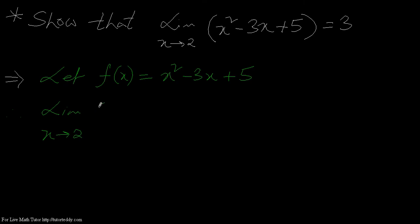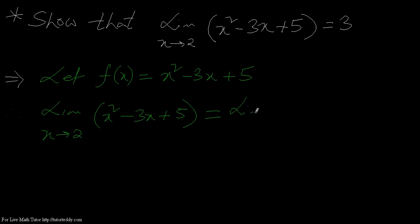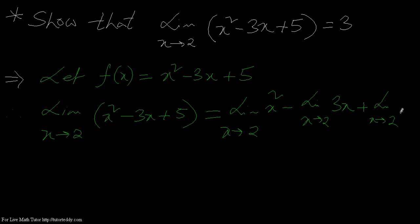This equals what I get when I break each term with its own limit. I can write: limit of the first term, minus limit of the second term, plus limit of the third term. That is: limit as x tends to 2 of x squared, minus limit as x tends to 2 of 3x, plus limit as x tends to 2 of 5. This breaking up comes from the fundamental limit theorem.